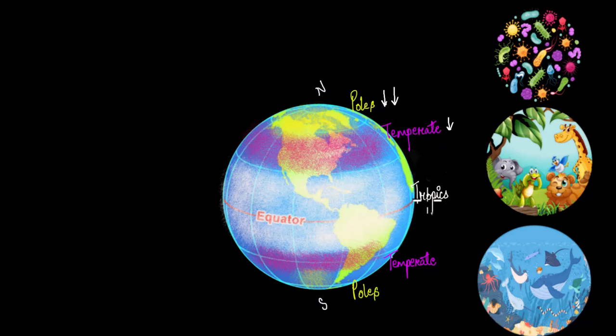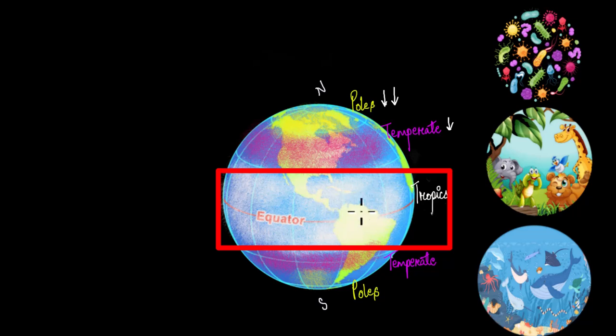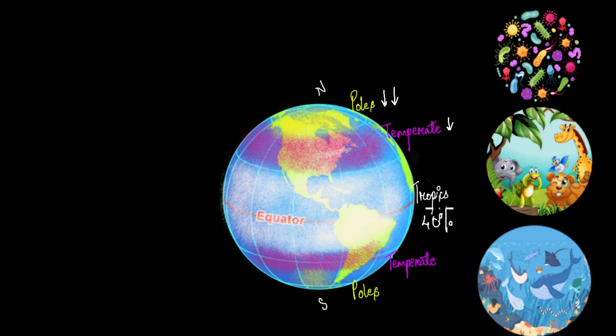So what is so special about the tropics? To some it might seem obvious, because it is quite prominent from the picture that the tropics have a very huge area. They occupy almost 40 percent of the total area of our planet. So more area means more number of species, right? Simple as that.